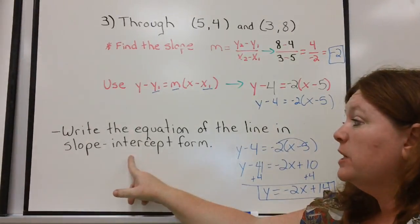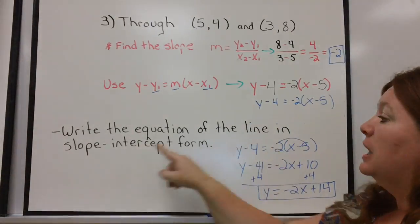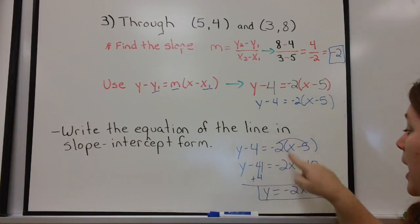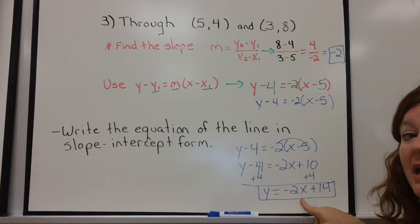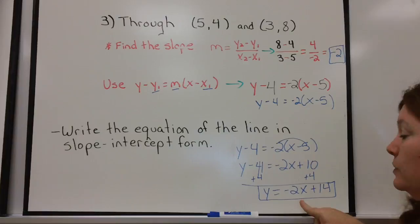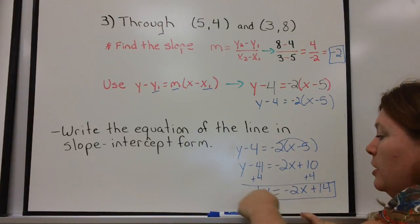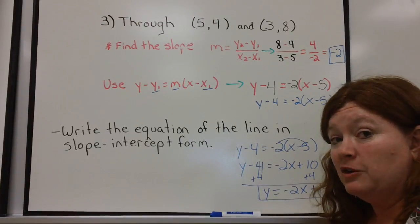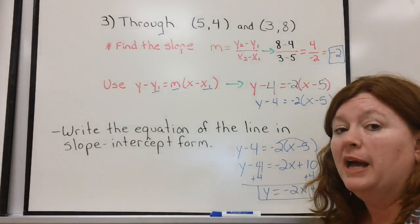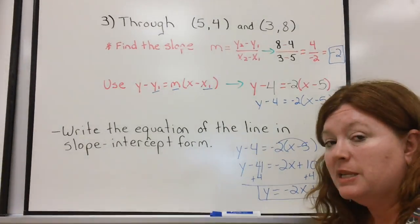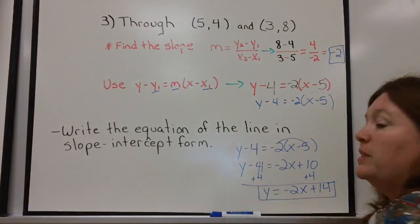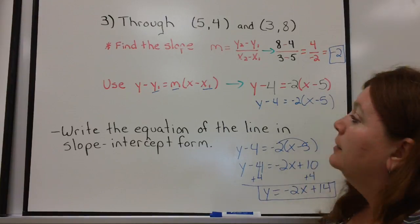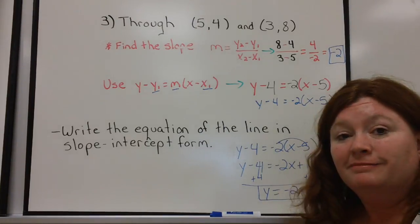If the question had said to write the equation in standard form, I'm still just one step away — all I have to do is move the negative 2x to the other side, because standard form has the x and y on the same side of the equal sign. Moving it over gives the answer in standard form.